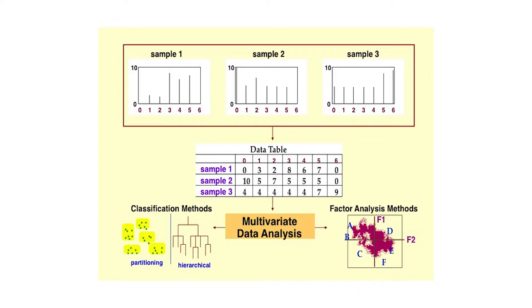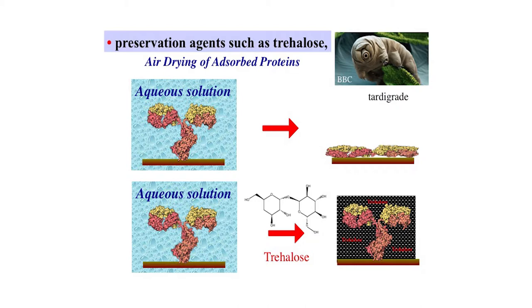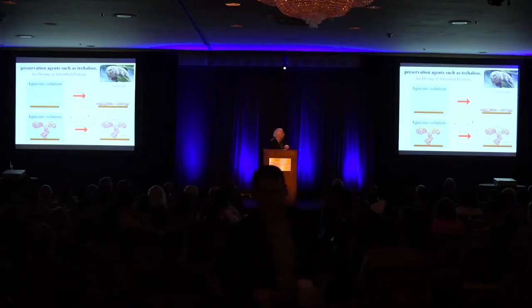Now, how can we get better protein surfaces for biomaterials? There's a whole tool chest of strategies to immobilize proteins on surfaces. I'll show a few examples. This data from my colleague Dave Kastner illustrates that one can control protein conformation at surfaces.